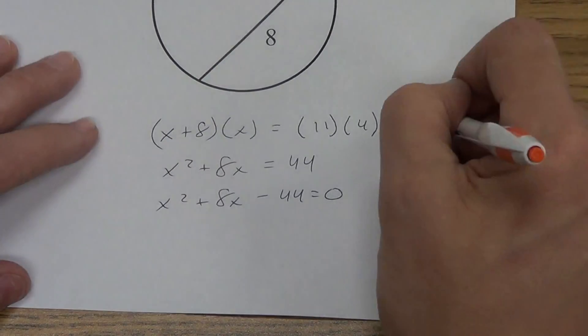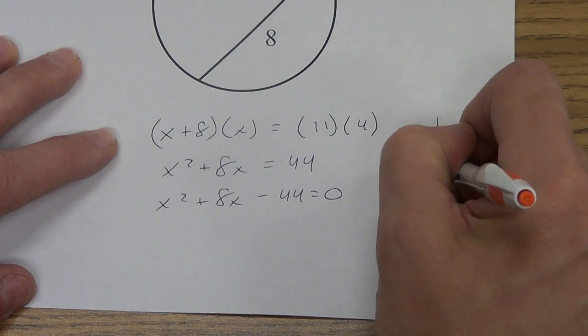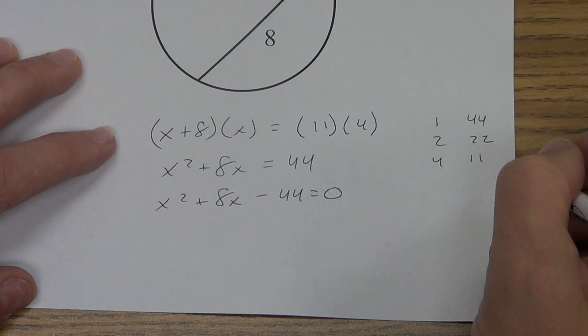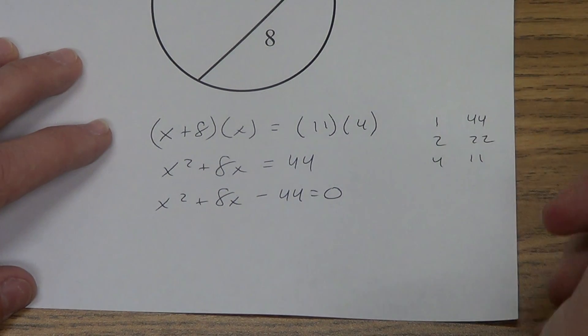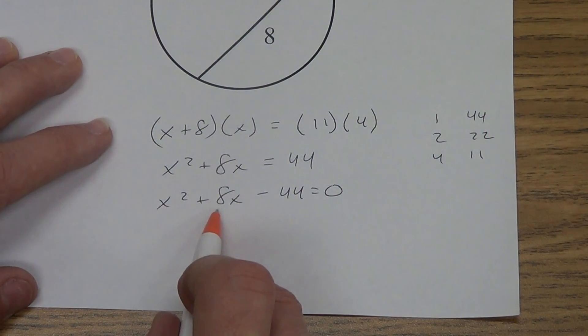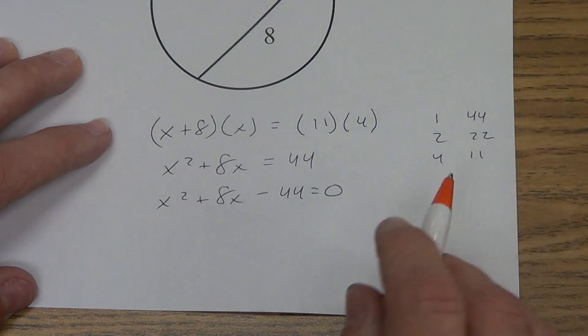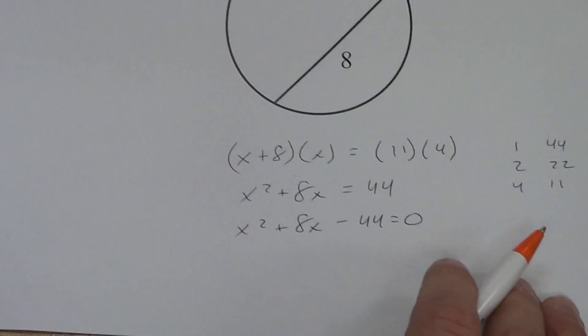We get this. Now what are some things that multiply to give me 44? 1 in 44, 2 in 22, 4 times 11. I'm back to the 11, so I don't have to check anything after that. Do any of these give me 8? No, that gives me a 7 if I subtract them, 20 or 24. So none of these work. So that means we have to use our quadratic formula.